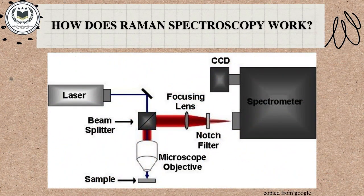How does Raman Spectroscopy work? To acquire Raman spectra, you just have to focus the laser onto the sample you want to investigate. That sample, however, must not be showing fluorescence to the laser used for excitation. If that is the case, the fluorescence will cover most of the Raman effect, since it is so weak in comparison.